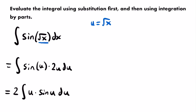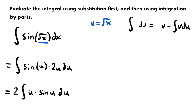The general integration by parts formula is: the integral of u dv equals u times v minus the integral of v du. Since we already used u in our u-substitution work, I'll replace u in this formula with w to avoid confusion. So the formula becomes: the integral of w dv equals w times v minus the integral of v dw. It's the same formula — just using different variables.